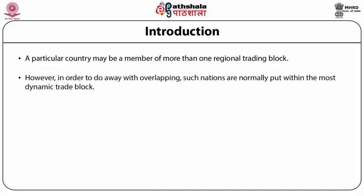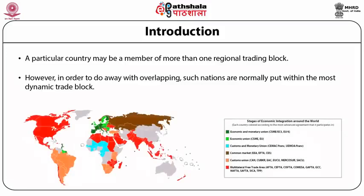A particular country may be a member of more than one regional trading block. However, in order to do away with overlapping, such nations are normally put within the most dynamic trade blocks. The stages of economic integration around the world are: Economic and Monetary Union, Economic Union, Customs and Monetary Union, Common Market, Customs Union, and Multilateral Free Trade Area.